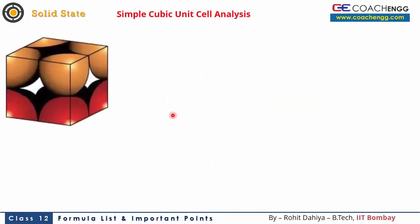Now let's move on and analyze the simple cubic unit cell individually. Here there were atoms at all 8 corners. I have sliced them into one single cube. The atom at each corner is shared by 8 different cubes.